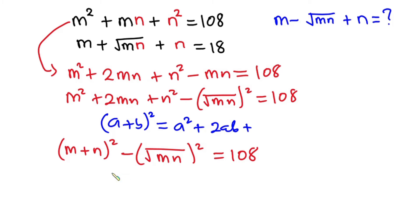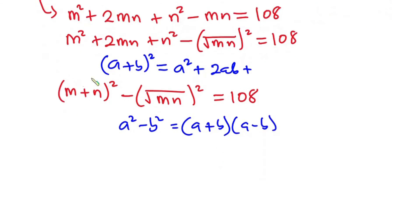From algebraic identities once again, if you have a squared minus b squared, this is the same as a plus b times a minus b. So I can rewrite this equation as m plus n plus the square root of mn, then m plus n minus the square root of mn, and this equals 108.